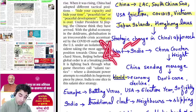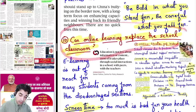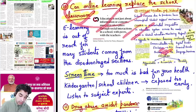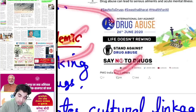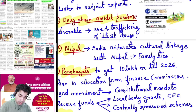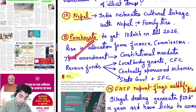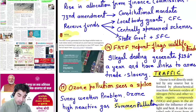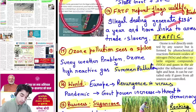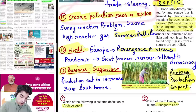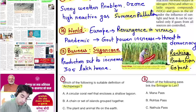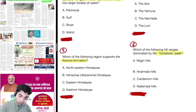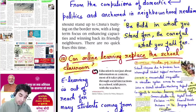Ninth is about why China is being aggressive along the LAC — a very good article with insights on China's game plan. Tenth: can online learning replace the school classroom? No. Eleventh is drug abuse amidst pandemic — June 26th is International Day Against Drug Abuse. Twelfth is Nepal. Thirteenth is panchayats and the 73rd amendment — funds allocation. FATF news on illegal wildlife trade is fifteenth, and we'll see ozone pollution and world news. In business we'll discuss sugarcane production. Finally, we'll solve an Indian geography quiz of six questions.